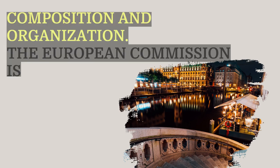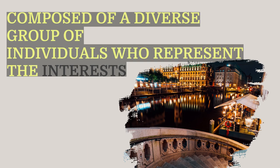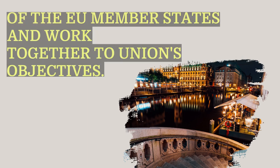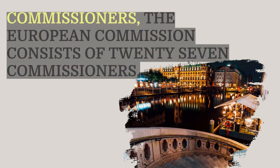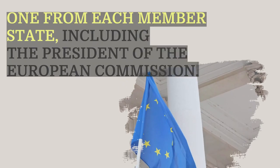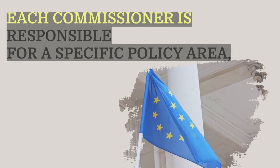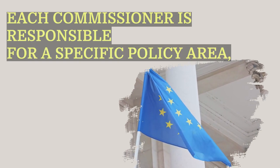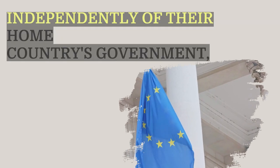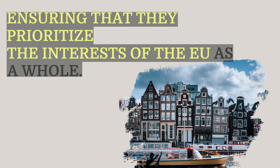The European Commission is composed of a diverse group of individuals who represent the interests of the EU's member states. It consists of 27 commissioners, one from each member state, including the President of the European Commission. Each commissioner is responsible for a specific policy area, such as agriculture, trade, or digital affairs, and acts independently of their home country's government, ensuring that they prioritize the interests of the EU as a whole.